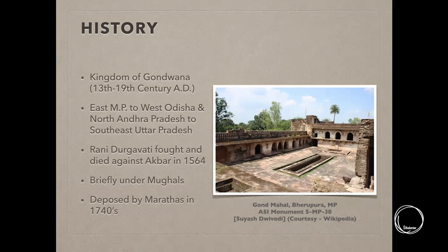The boundaries of the Gondwana kingdom extended from east Madhya Pradesh to west Odisha, and north Andhra Pradesh to southeast Uttar Pradesh. The Gond people were also present during the Mughal period. Rani Durgavati, who was the ruler of the Gond people at that time, fought against Akbar in 1564 and died in that battle. After that, the Gondwana kingdom briefly came under the Mughals, while in the 1740s when the Marathas rose to prominence, they completely disposed of the Gondwana kingdom.